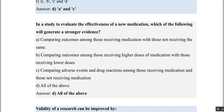In a study to evaluate the effectiveness of a new medication, to generate stronger evidence you need to: compare outcomes among those receiving versus not receiving the medication, compare outcomes at higher versus lower doses, and assess adverse events and drug interactions. To generate strong evidence about a new medication's effectiveness, you must check both safety and efficacy parameters — so all of the above are the answer.